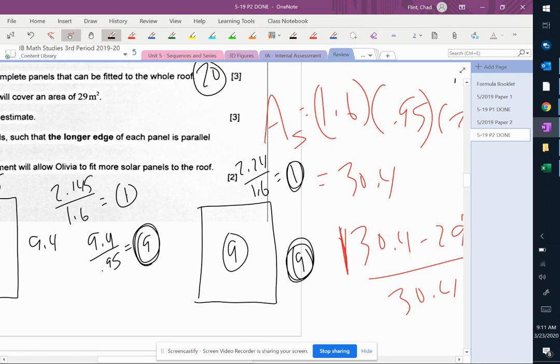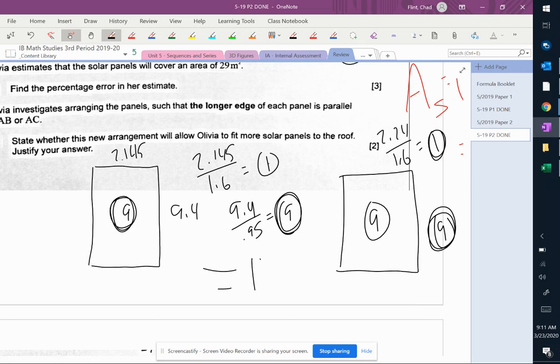So I can only fit 9 and 9, which means I can only fit 18 that way. And I can fit 20 the other way.